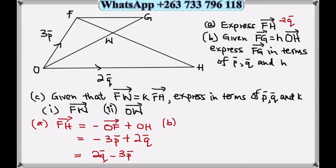Then on part b, we are going to use a constant. We will just apply the quantity. If FG equals h times vector OH, and vector OH quantity is 2 vector q, then we multiply. So this will be 2h vector q. That's how we express a constant.